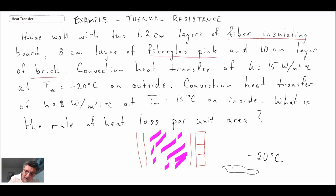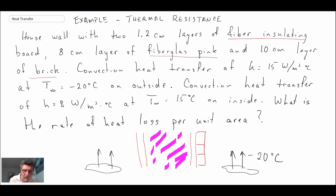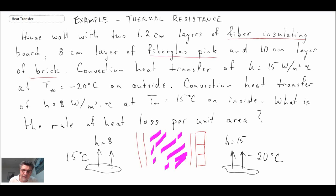The convective heat transfer coefficient on the outside is 15 watts per square meter degrees C. On the inside of the house — whether from forced air heating or radiators — the temperature is 15 degrees C, and h inside is equal to 8. So we're going convection, conduction, conduction, conduction, conduction, then convection.